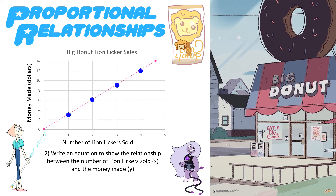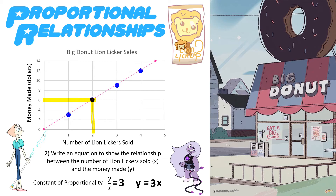Now we're going to write an equation to show the relationship between the number of lion lickers sold, X, and the money made, Y. We use that constant of proportionality, which we already found to be 3, because no matter which point you use, dividing Y by X gives you 3. For example, this point tells me I'd make $6 — my Y — if I sell two lion lickers, and 6 divided by 2 is also 3. So the equation is simply Y equals 3X. If I asked how much money you'd make selling 10 lion lickers, you'd plug in 10 for X — 3 times 10 is 30 — and the Big Donut would make $30.